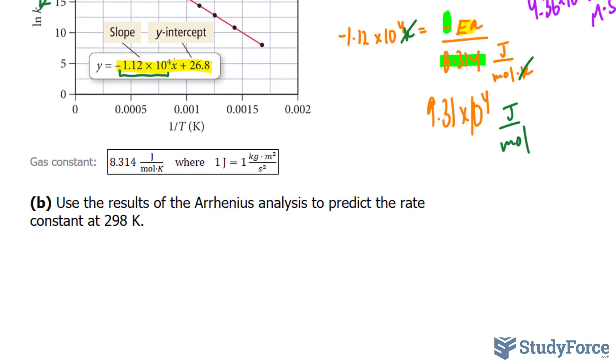In part B, they ask, use the results of the Arrhenius analysis to predict the rate constant at 298 Kelvin.